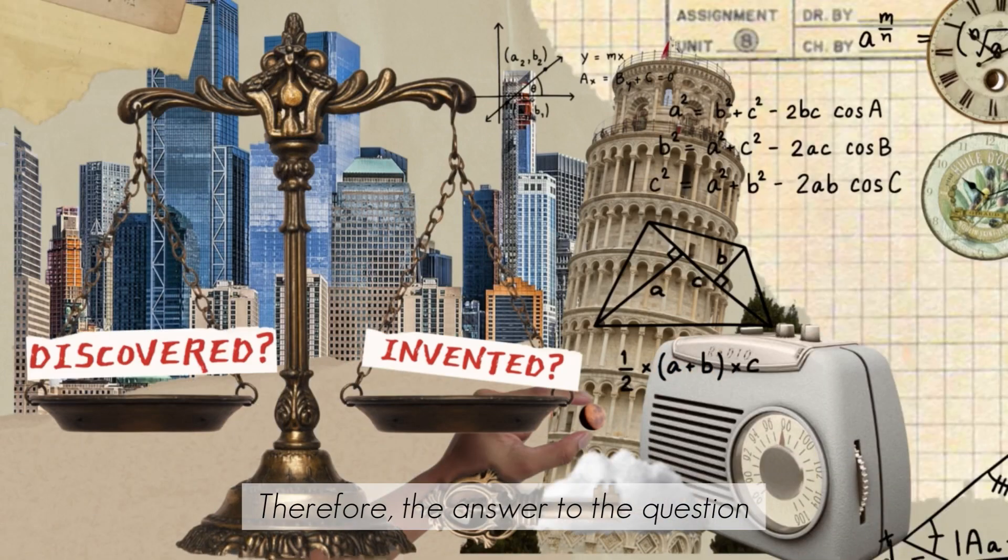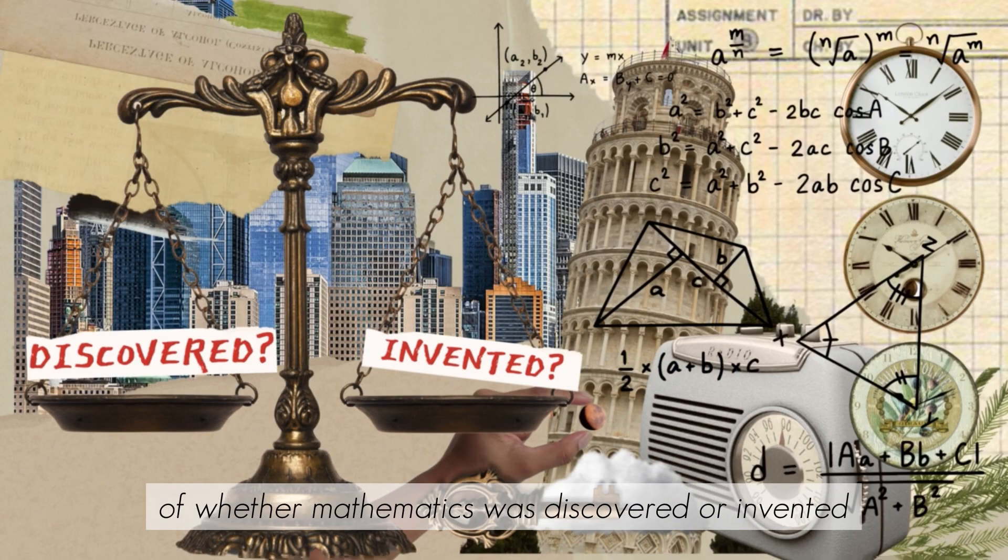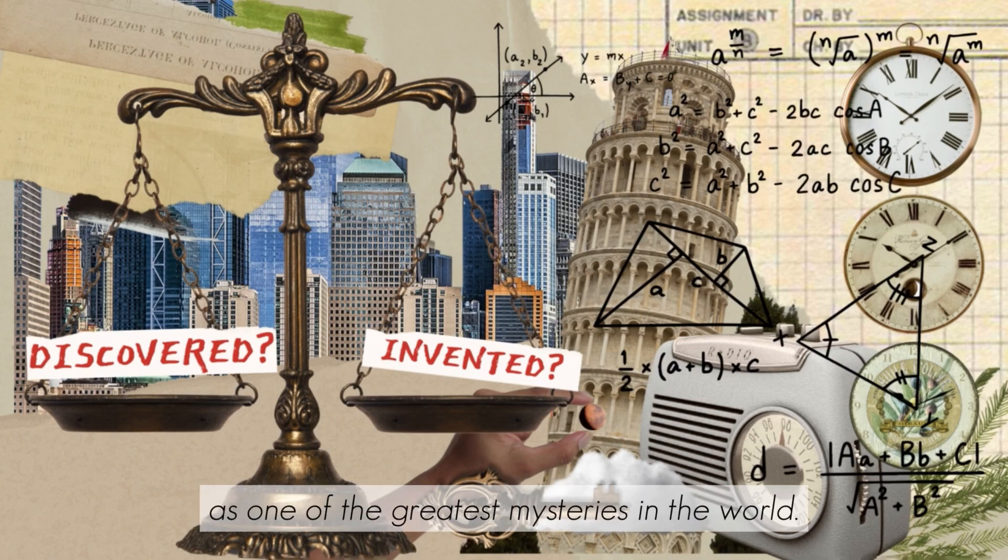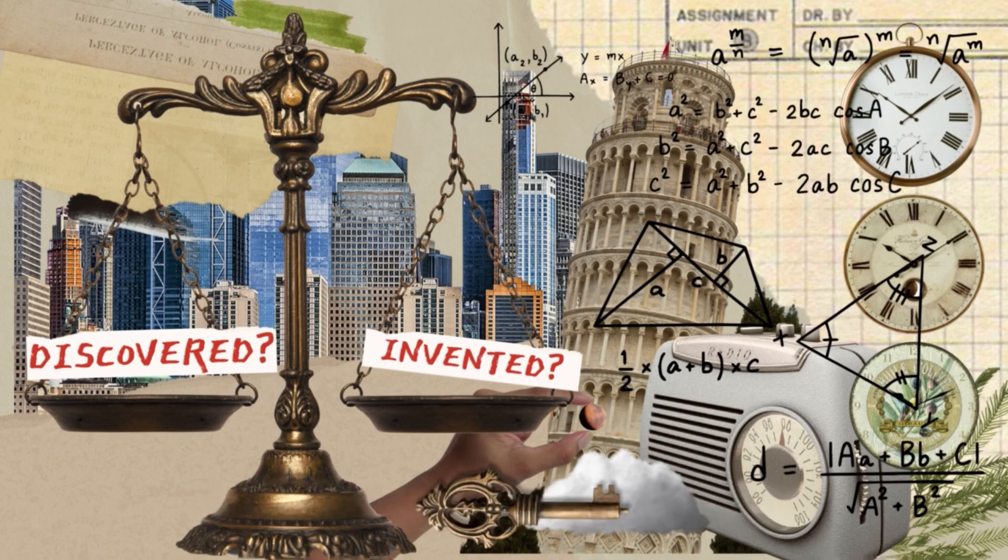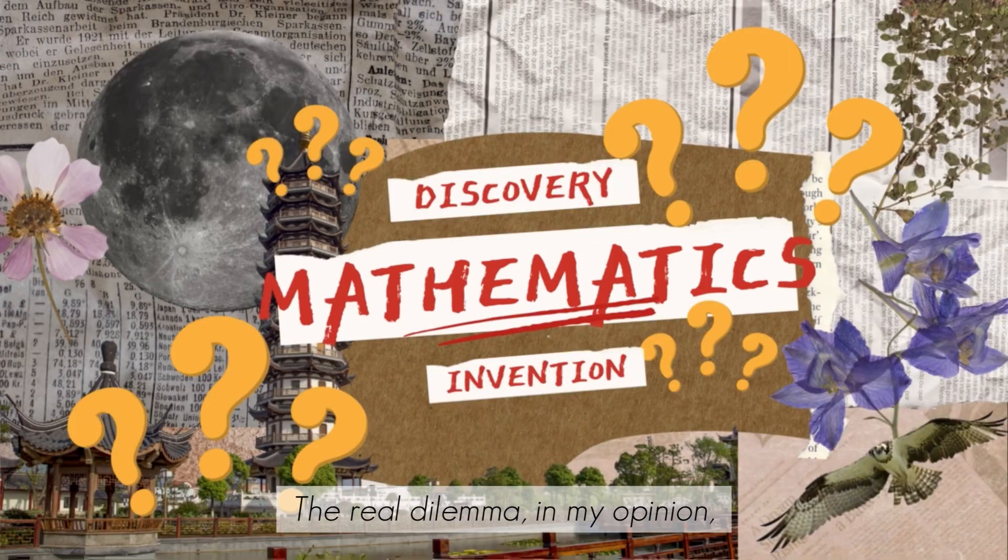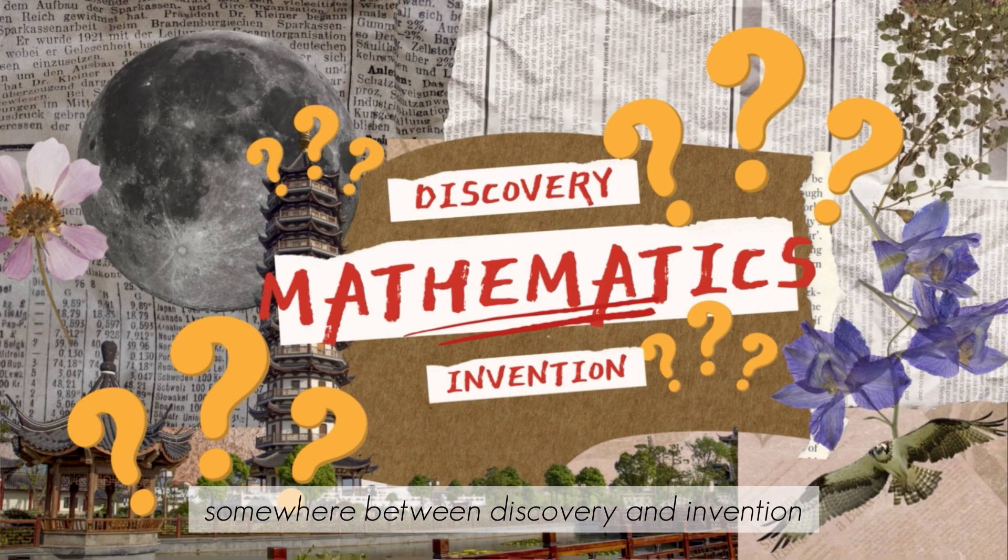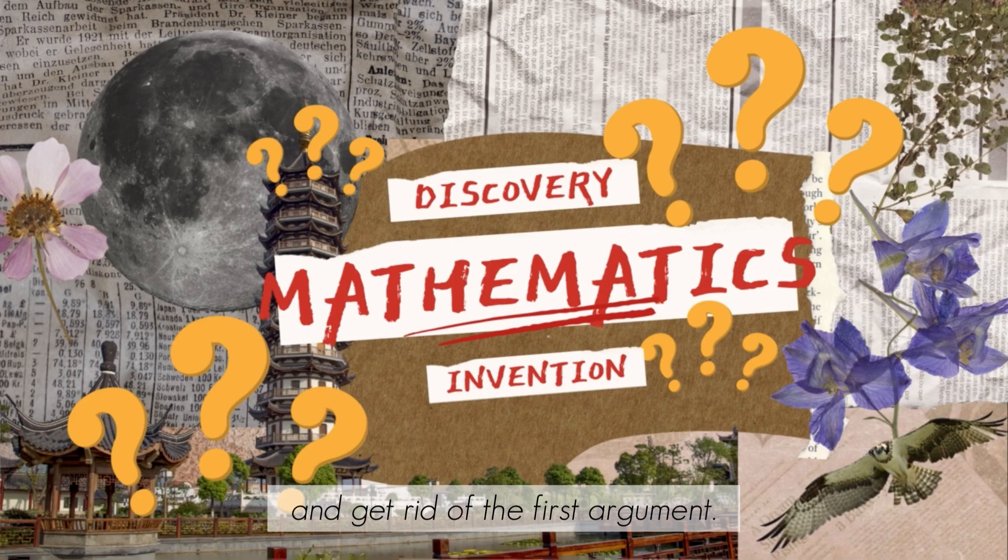Therefore, the answer to the question of whether mathematics was discovered or invented is both. This question will go down as one of the greatest mysteries in the world. But why are we arguing it? It is both. The real dilemma, in my opinion, is how we do not have a third term that lies somewhere between discovery and invention to best describe mathematics and get rid of the first argument.